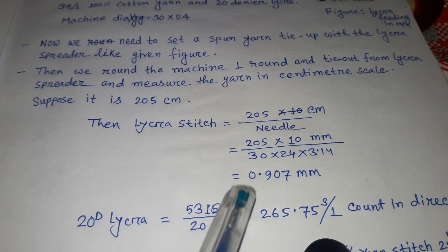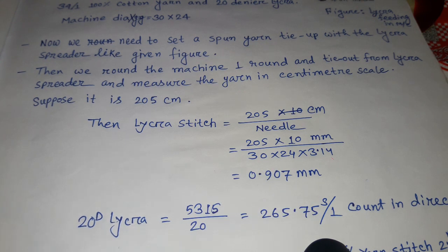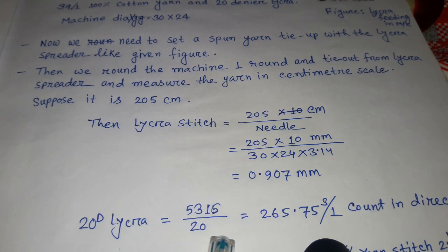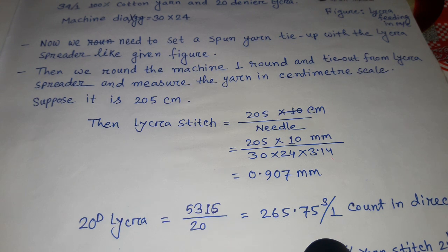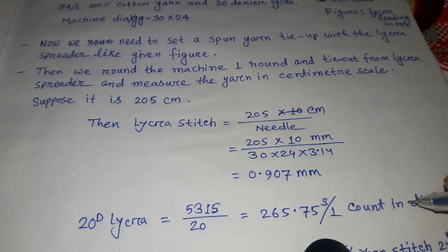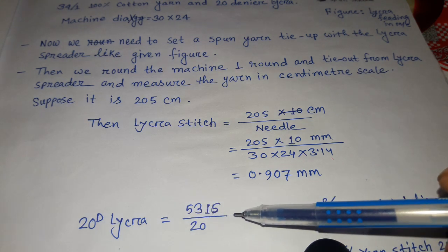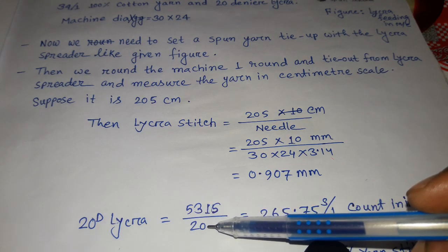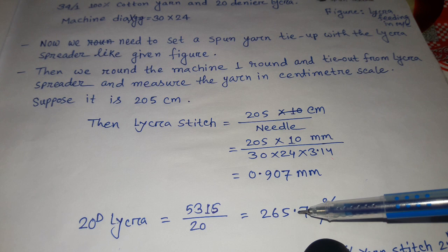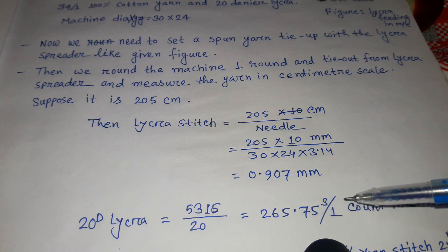Here we use 20 denier lycra, so we have to convert it into an indirect count system. Using the formula: 5310 divided by 20, we get 265.75 single count.